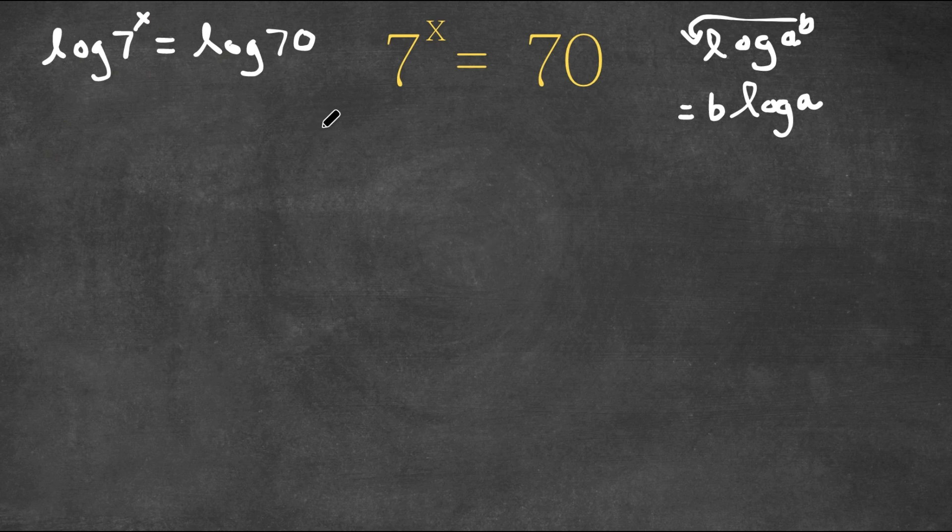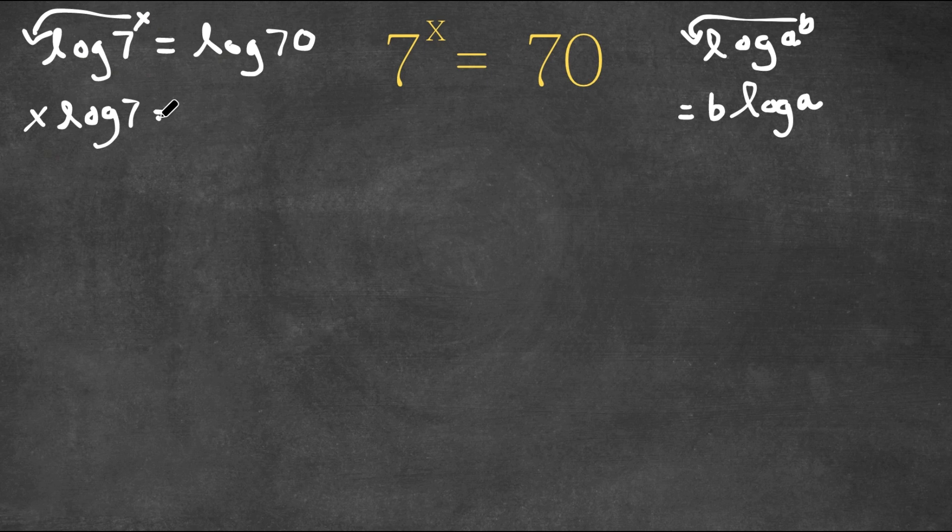So in this case, we have log 7 to the power of x, and we can think of 7 as a and x as b. Remember how I move the b to the front of the logarithm? We can actually move this x to the front as well. So this would be x times log 7 is equal to log 70.